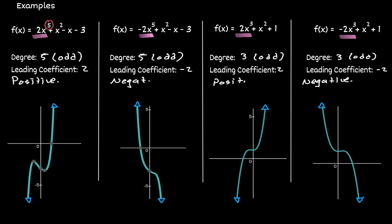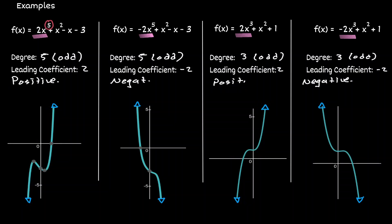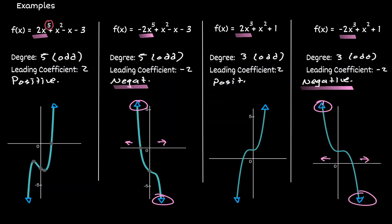What determines the direction is the sign of the leading coefficient. In those examples where the leading coefficient was positive, as we were moving to the left we were decreasing, and as we were moving to the right we were increasing. It does not matter the value of the leading coefficient — if it's a positive number, then we always have end behavior down to the left and up to the right. And if the leading coefficient had a negative sign, then it's the opposite: as we move to the left we go up, and as we move to the right we go down. If the leading coefficient is negative, we always have end behavior up to the left and down to the right.